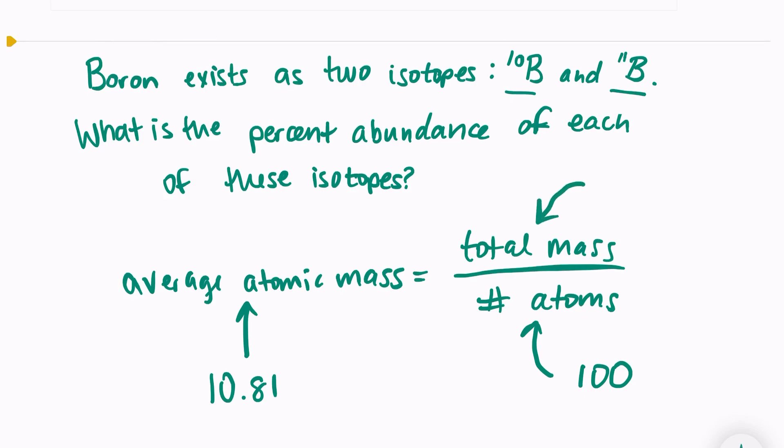And then the total mass, remember that total mass will be equal to the atomic mass of each sample times the percentage of each sample. And I'm working with two isotopes, so I should have my atomic mass times the percentage for both of those.